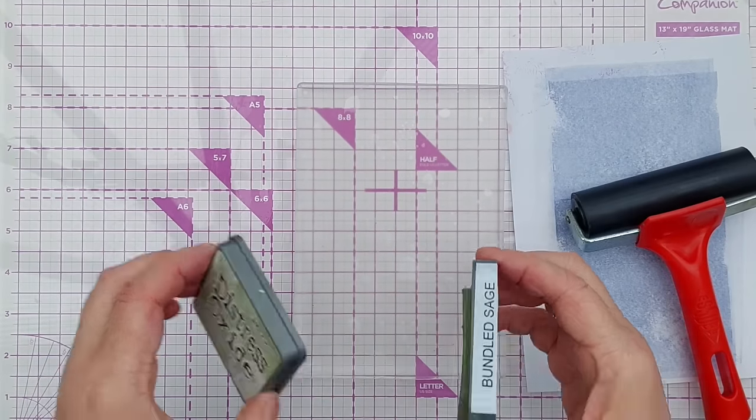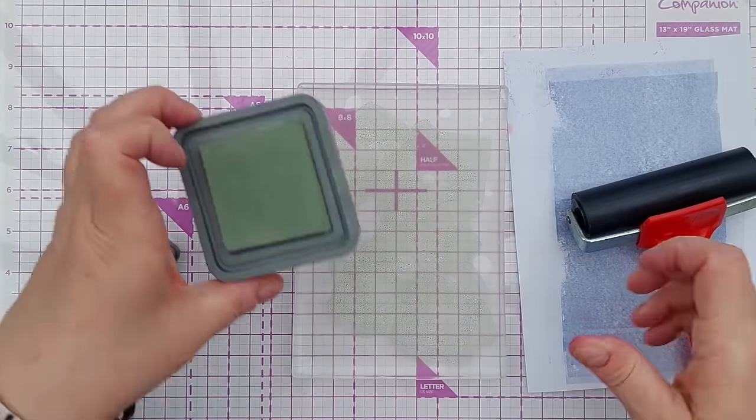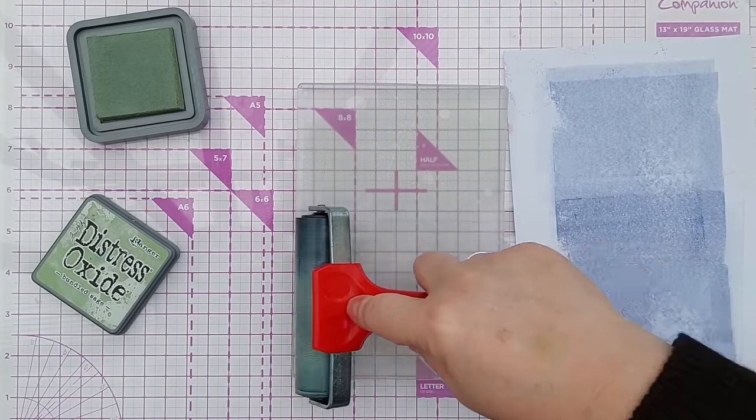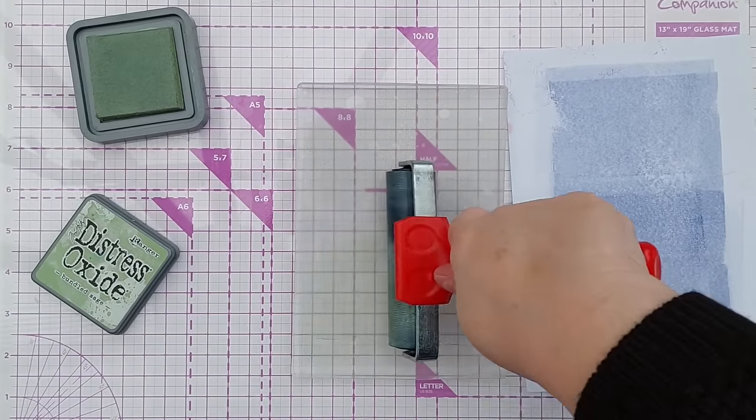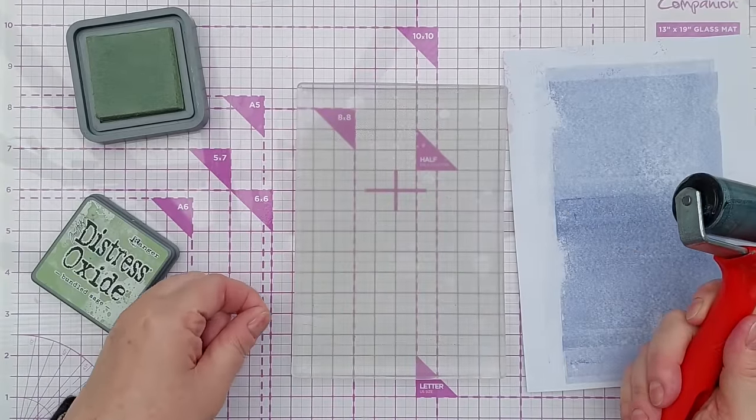Now I think I'll go with a green, this is bundled sage, and again I'm going to create a nice even layer on here, spread out that ink, get rid of the cat hair again. I don't even own a cat.